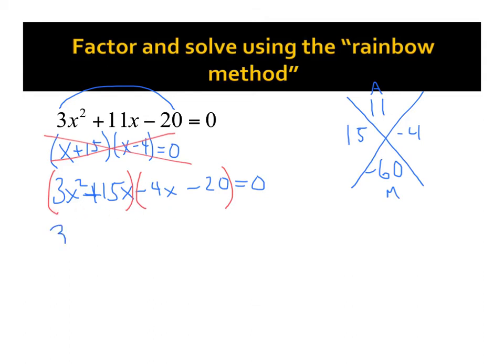So if I factor out my GCF in the first one, that's 3x times x plus, and 15 divided by 3 is 5, x divided by x, that goes away. Okay, next one I factor out a negative 4, and I'm left with x plus 5 once again. That equals 0.